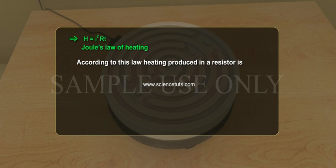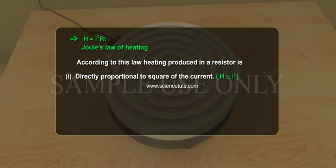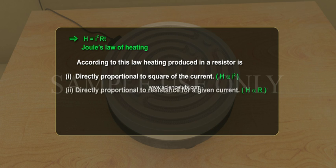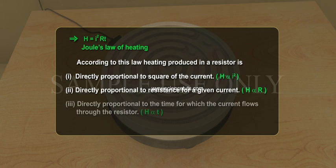According to this law, the heat produced in a resistor is: 1. Directly proportional to the square of the current. 2. Directly proportional to the resistance for a given current. 3. Directly proportional to the time for which the current flows through the resistor.